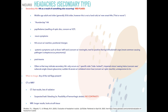Additional red flags for secondary headache include headache following trauma, a headache that always occurs on one side (side-locked), impaired vision or seeing halos around lights suggesting glaucoma, sudden and severe unilateral vision loss possibly indicating optic neuritis, and failure to respond to treatment. Any of these findings warrant further workup and imaging.